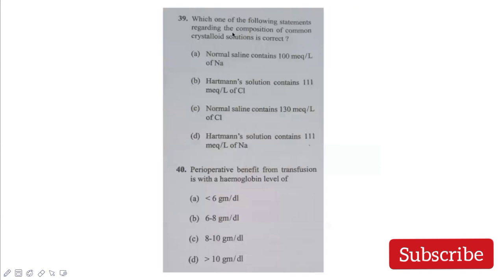Untidy wounds are characterized by each of the following: crushed, avulsed - yes. Contaminated - yes. Devitalized - yes. No loss of tissue - no. No loss of tissue is not an option. It's usually seen in tidy wounds. Which statements regarding composition of common crystalloid solutions are correct? NS contains 100 milliequivalents of sodium - no, 154. Hartmann solution, that is Ringer lactate, contains 111 milliequivalents of chloride - yes, this is the correct answer. NS contains 130 milliequivalents of chloride - no, again 154. RL contains 111 milliequivalents of sodium - no, contains 130. Perioperative benefit from transfusion with hemoglobin level of less than 6 grams. If it's less than 6 grams, we can have some benefit. 6 to 8 grams may or may not, but more than 8 grams are not beneficial. The answer is less than 6 grams.